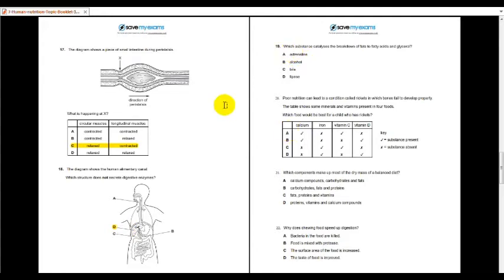Number 19, which substance catalyzes the breakdown of fat into fatty acids? Lipase. Yes. If this one anybody got wrong, I don't know lah what to say. Number 20, poor nutrition can lead to condition called rickets in which bones fail to develop properly. So which food would be best for child who has rickets? Must be calcium and vitamin D.